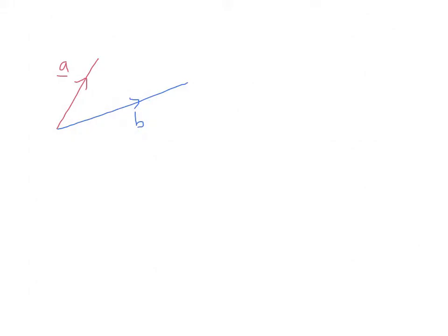We're going to start with a vector a and a vector b. If we join up the end of a to the end of b, this vector here would be the vector from position a to position b. We know that this vector is the same as minus a plus b, or rather b minus a. So this is the vector b minus a. We've got the red vector a, the blue vector b, and I'm going to put an angle here, theta, and write down the cosine rule.